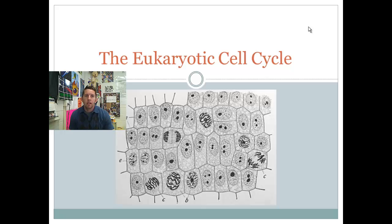Here we go, getting into the cell cycle of the eukaryotic cell — how a cell functions normally, and also how it divides itself to make new cells. We're going to talk about that cycle and the actions therein.